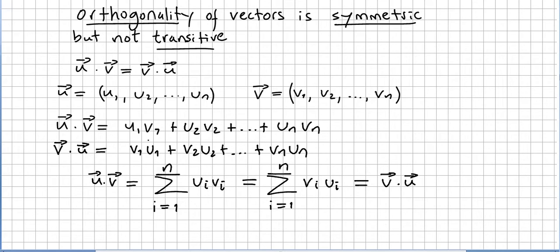And of course, the multiplication is commutative, right? So these two, they are the same. Therefore u·v equals v·u.